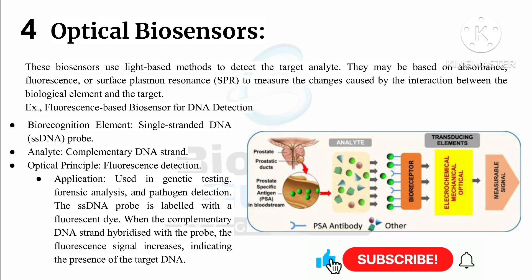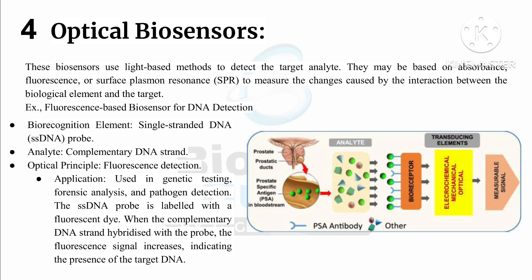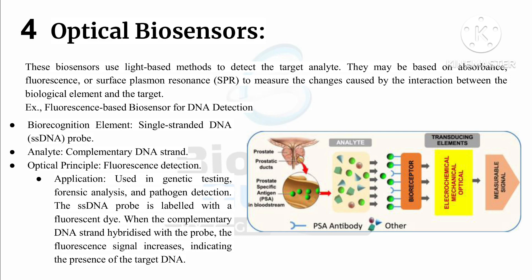Next, fourth, optical biosensor. This biosensor uses light-based methods to detect the target analyte. They may be based on absorbance, fluorescence, or surface plasmon resonance to measure changes caused by interaction between the biological recognition element and the target. An example is a fluorescence-based biosensor for DNA detection, where single-stranded DNA is the biological element and the complementary DNA strand is the analyte. This type is used in genetic testing, forensic analysis, and pathogen detection. The complementary DNA strand hybridizes with the probe, and the fluorescence signal increases, indicating the presence of the target DNA.